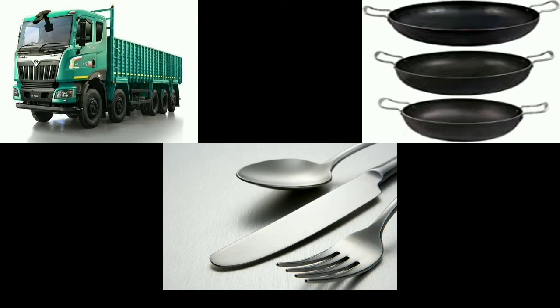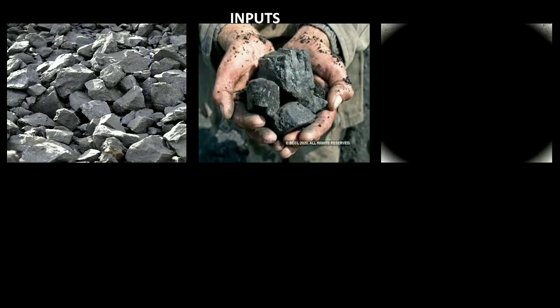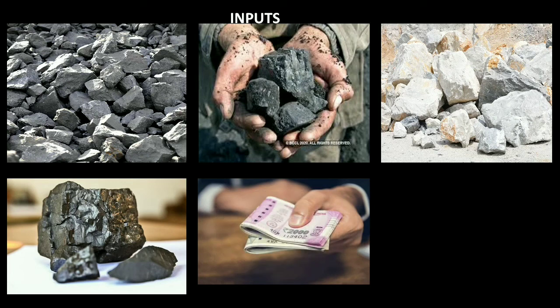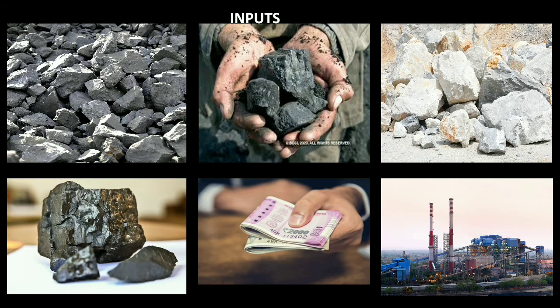The inputs of iron and steel industries include raw materials such as iron ore, coal, limestone, and magnesium. They also require a huge amount of capital and infrastructure. Money is needed to employ people and start up the industry, and the plant or facility where the process takes place is also a necessary input.